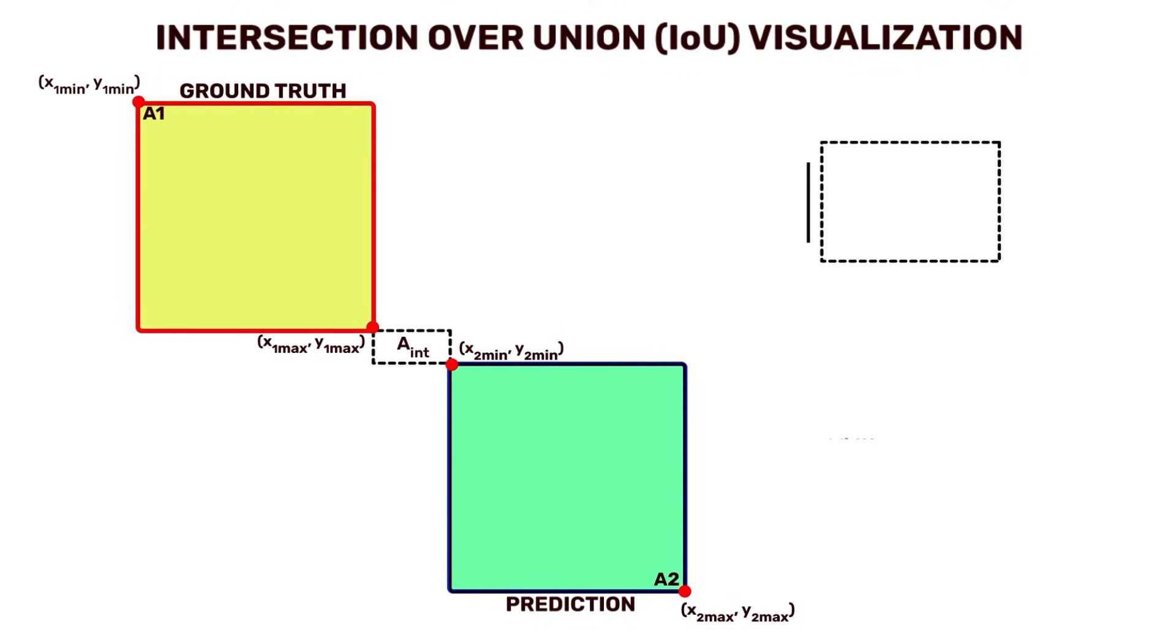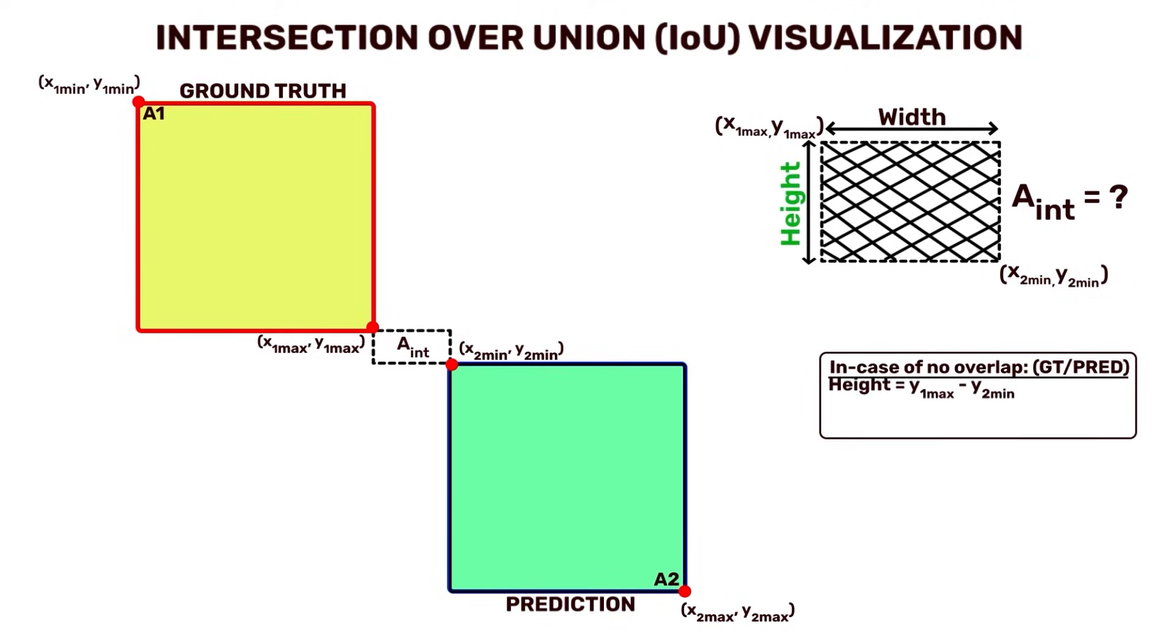The height of the intersection is calculated by subtracting Y2min from Y1max. This subtraction gives us the vertical distance between the top and bottom edges of the intersection.